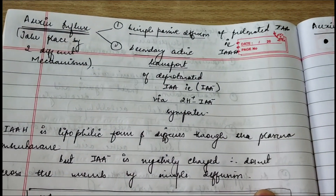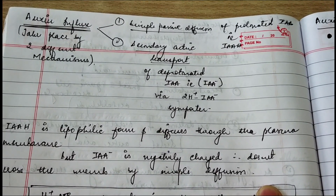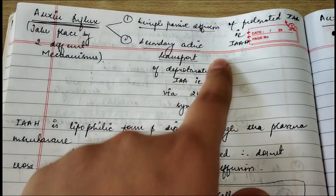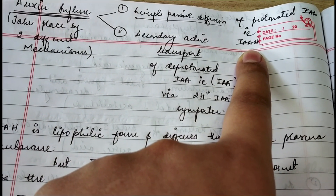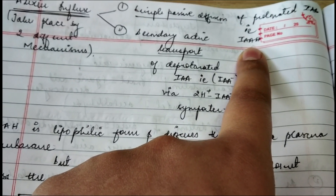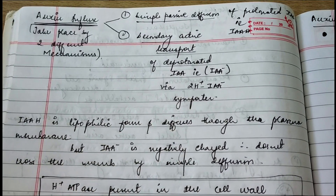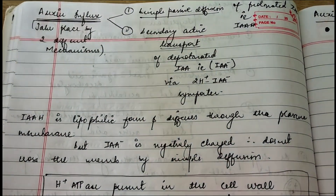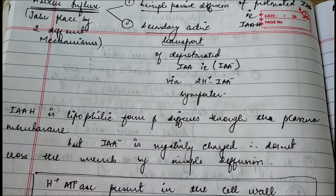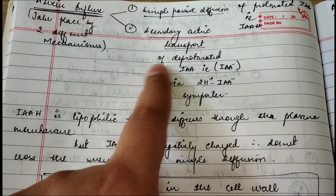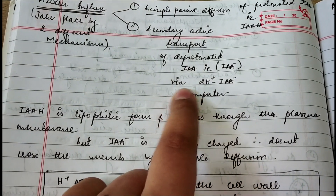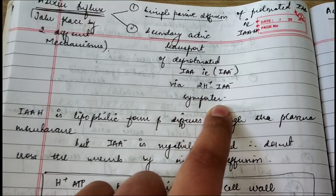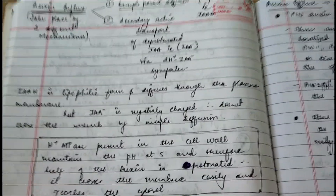In simple passive diffusion, the protonated form of indole-3-acetic acid — that is IAAH, where one H group is added — diffuses across the membrane. In secondary active transport, the deprotonated IAA — that is IAA⁻, where one hydrogen is removed — is transported via a 2H⁺/IAA⁻ importer. These importers are present inside the plasma membrane.